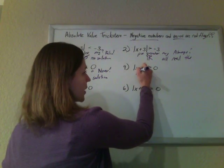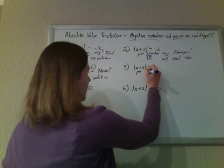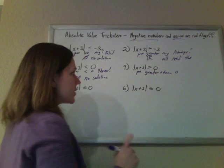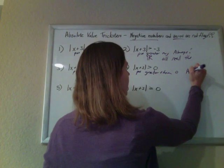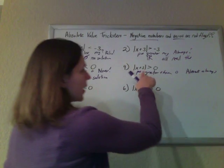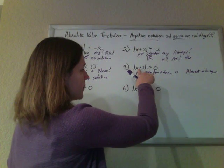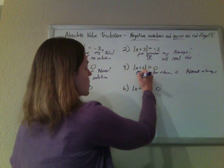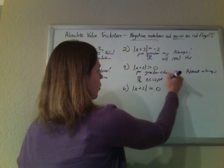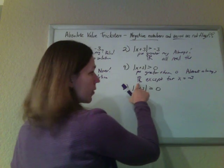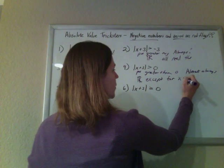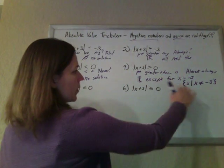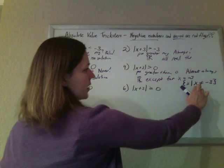Absolute value represents a positive number. A positive number being greater than zero — you want to say always, right? But there's one case when it's not. Almost always. It won't be greater than zero if it's equal to zero. So if x is negative three, it'll equal zero, and zero is not greater than zero. So this is all real numbers except for x equals negative three. In fancy notation, it's the set of all x such that x does not equal negative three.